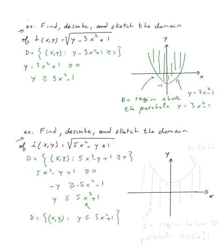We graph y = 5x² + 1, which is a parabola with vertex at (0, 1) opening upward. We want all points such that y is less than or equal to 5x² + 1, which is the region below the curve. The domain is the region below the parabola y = 5x² + 1. And that's it for this example.